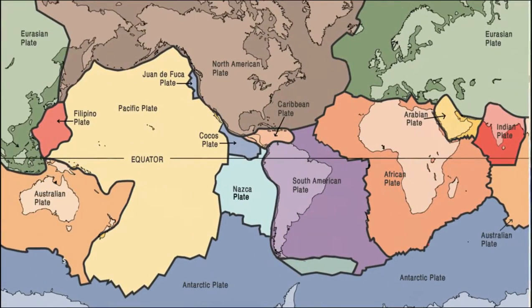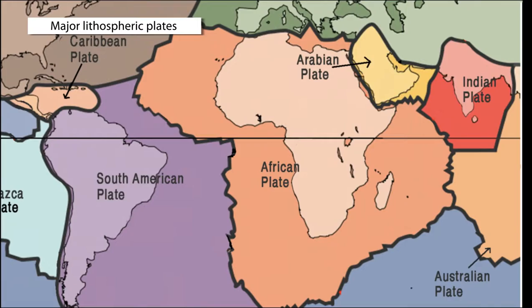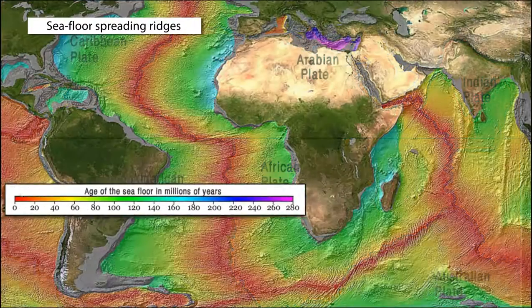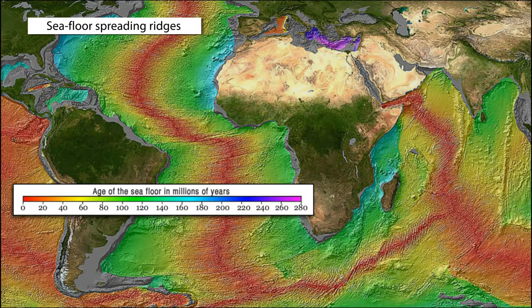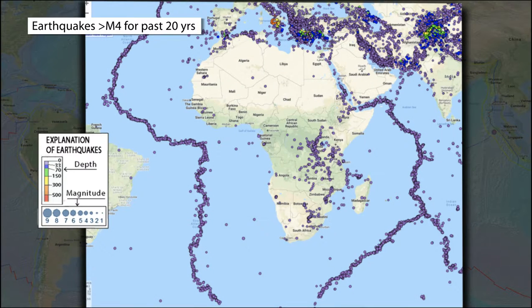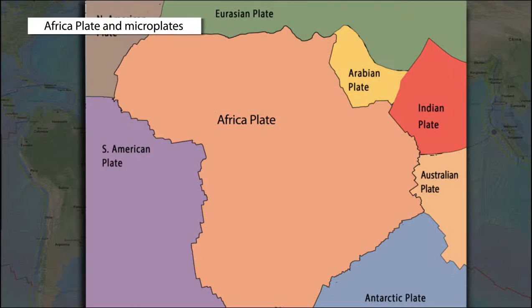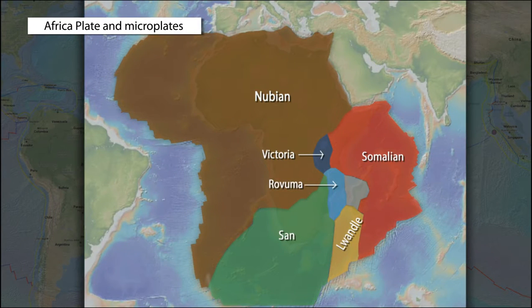On simplified world maps, the African Plate is a major lithospheric plate containing Earth's second largest continent. This map of oceanic plate edges shows sea floor spreading ridges adding new oceanic plate to the west, south, and eastern sides of the African Plate. As expected, shallow earthquakes occur around the boundaries of the African Plate. But why is there a band of earthquakes slicing through the eastern part of the African continent? When we go beyond the simple world view, we discover that continental rifting is breaking eastern and southern Africa into multiple plates and microplates.